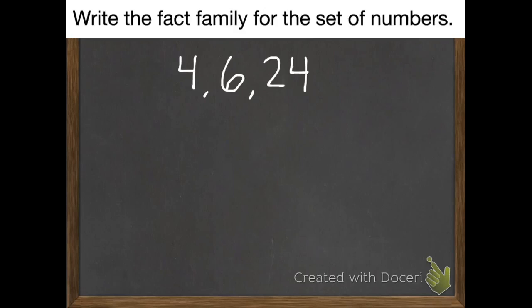So I can start with the 4 and the 6. I can multiply those. 4 times 6 equals 24. Then I can flip that 4 and the 6 around and do 6 times 4 equals 24. So those are my two multiplication facts.